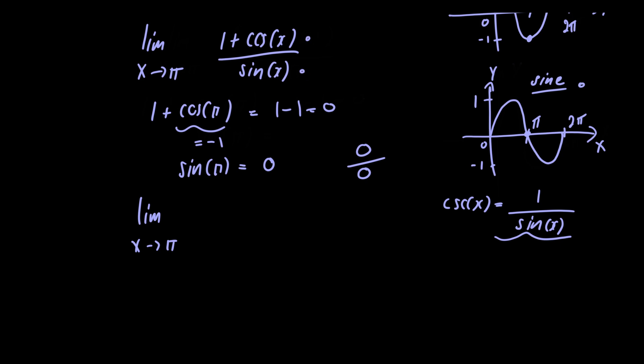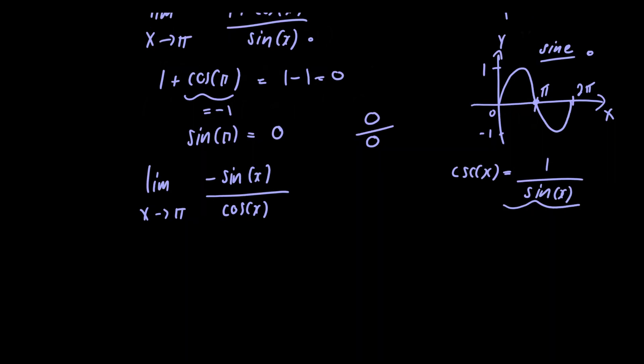So we're just going to have minus sine of x in the numerator divided by cosine of x in the denominator. Now we can just go ahead and let x equal π, so we have minus sine of π divided by cosine of π. The numerator is equal to 0 and the denominator is equal to minus 1, so the answer to this problem is 0.